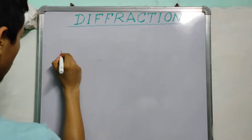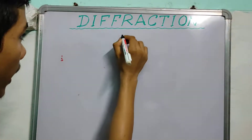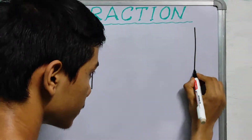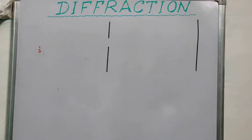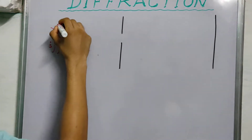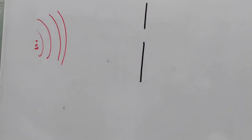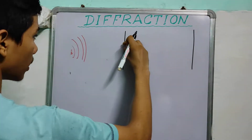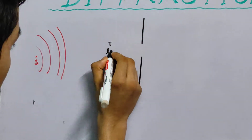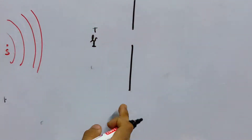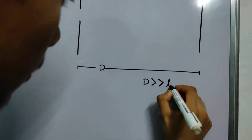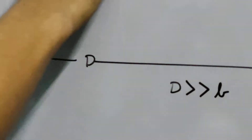Here is our setup: a point source, and at some distance from it there is a single slit, and beyond that is a screen. The slit has a width b. The distance D from the slit to the screen is extremely large compared to the slit width.